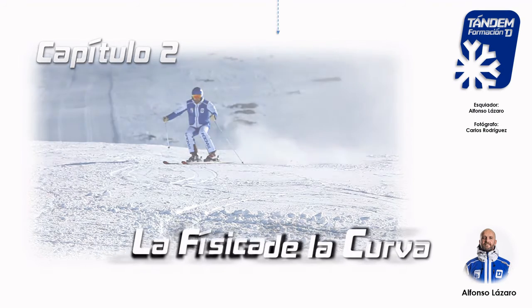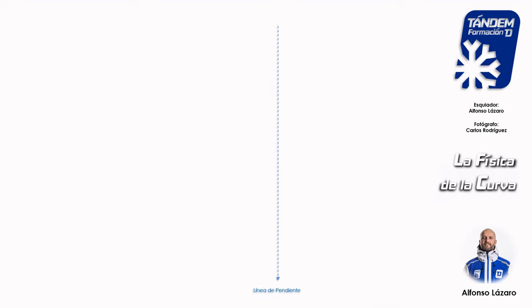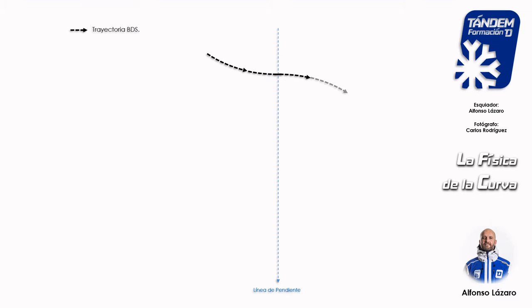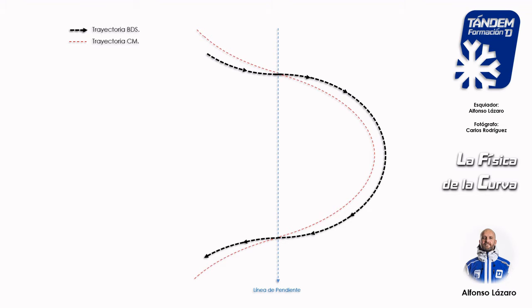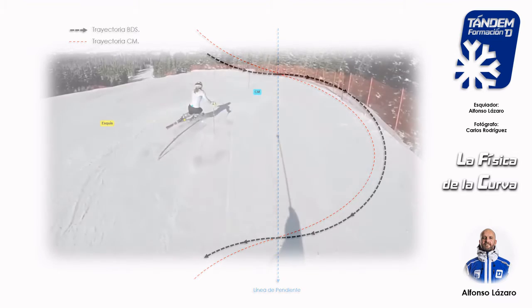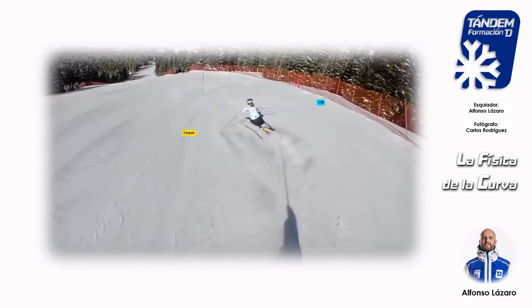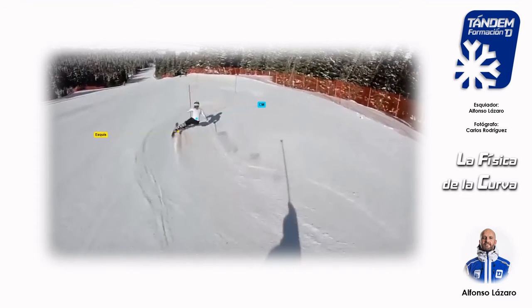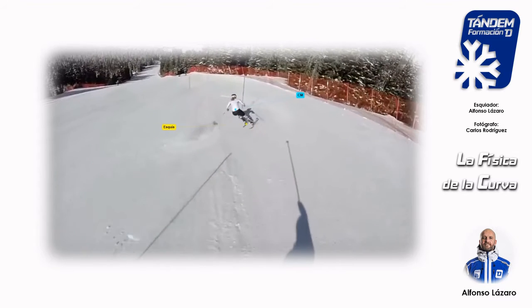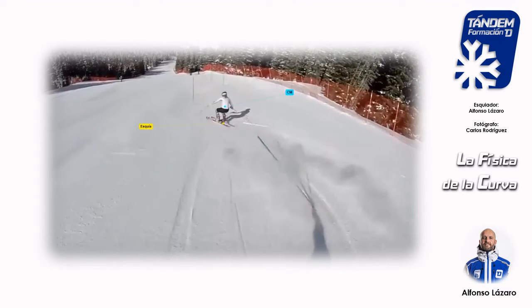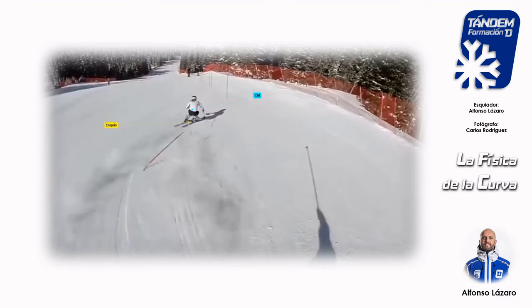Para analizar físicamente la cinemática del movimiento de un esquiador en una curva, vamos a comenzar diferenciando las trayectorias que describen dos puntos importantes del sistema: por un lado la trayectoria que describe su base de sustentación, y por otro la que describe su centro de masas. Con el fin de simplificar al máximo el análisis, consideraremos que ambas trayectorias son aproximadamente circulares, aunque somos conscientes de que esta suposición, en la realidad, no es estrictamente cierta. En este vídeo podemos observar cómo ambas trayectorias se cruzan en la transición entre curvas cuando se produce el cambio de dirección.